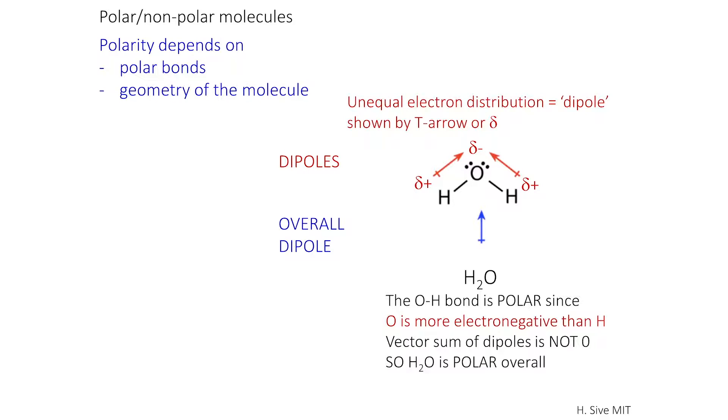Let's look at some polar molecules. Whether a molecule is polar or not polar depends on two things: whether it has polar bonds, where the electrons are unequally distributed.